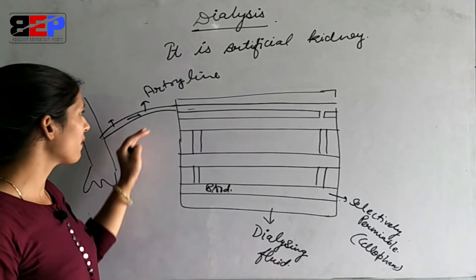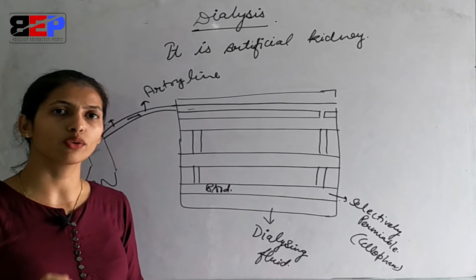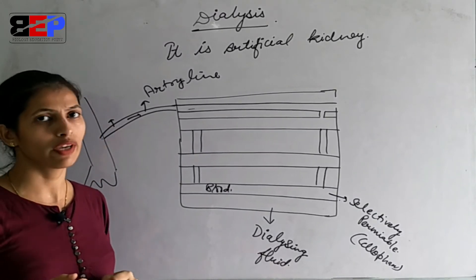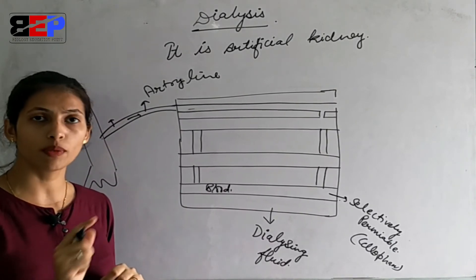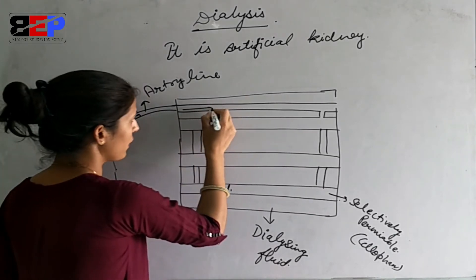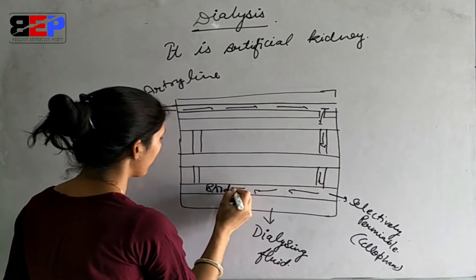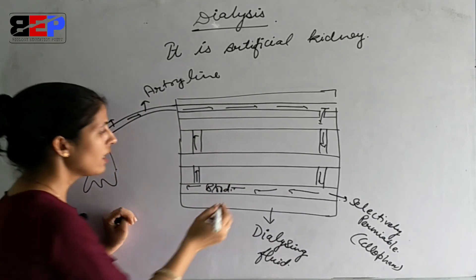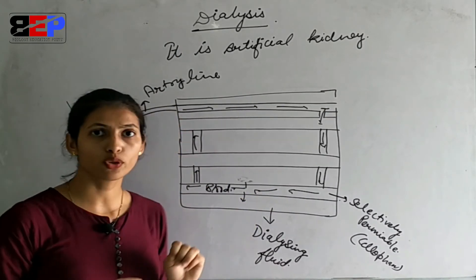Because the patient's kidney has failed, there is metabolic waste in the blood. The dialyzing solution has the composition of normal blood and contains no metabolic waste. So the metabolic waste diffuses from the blood into the dialyzing solution by the process of diffusion.